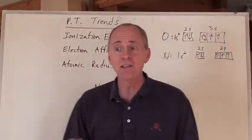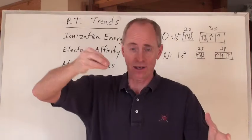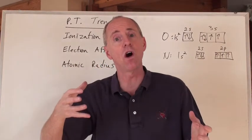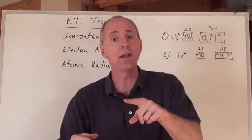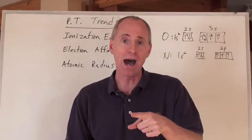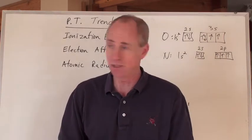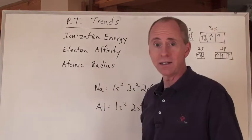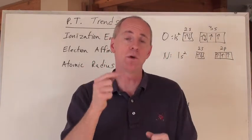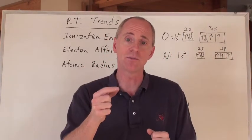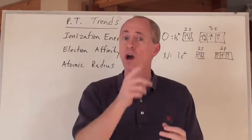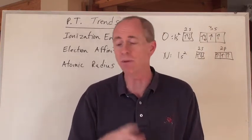Electron affinity is giving an electron to an atom and how much energy is involved — usually released — when a mole of electrons is acquired by an element. And the atomic radius is the size of the atom, and we look at its trend as we go across and up and down the periodic table.